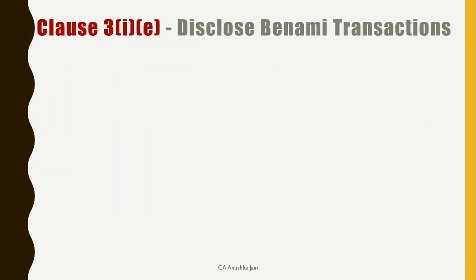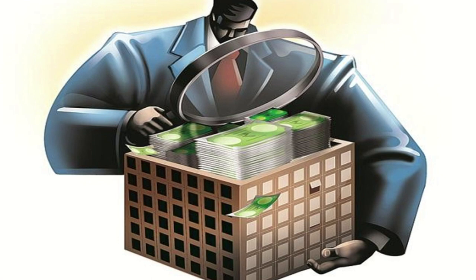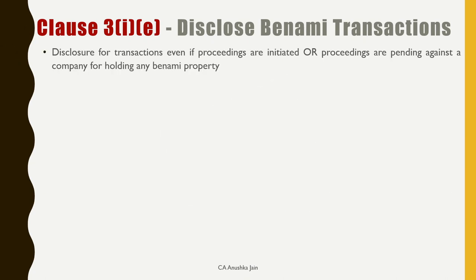Third new clause pertaining to fixed assets is 1E. It deals with disclosure of benami transactions. Pahle ye jaante hain ki benami property hoti kya hai. Kuch log apne kaale dhan ko aisi sampatti mein niwesh karte hain jo unke khud ke naam par na hokar kisi aur ke naam par hoti hai — jaise naukar, patni, bacho, mitron, ya parivaar ke anye sardasiyon ke naam se. So benami property means property company ki to hai but it is held in the name of some proxy person. CARO 2020 requires disclosure for transactions even if proceedings are initiated — that is, even if not complete — or proceedings are pending against a company for holding any benami property.